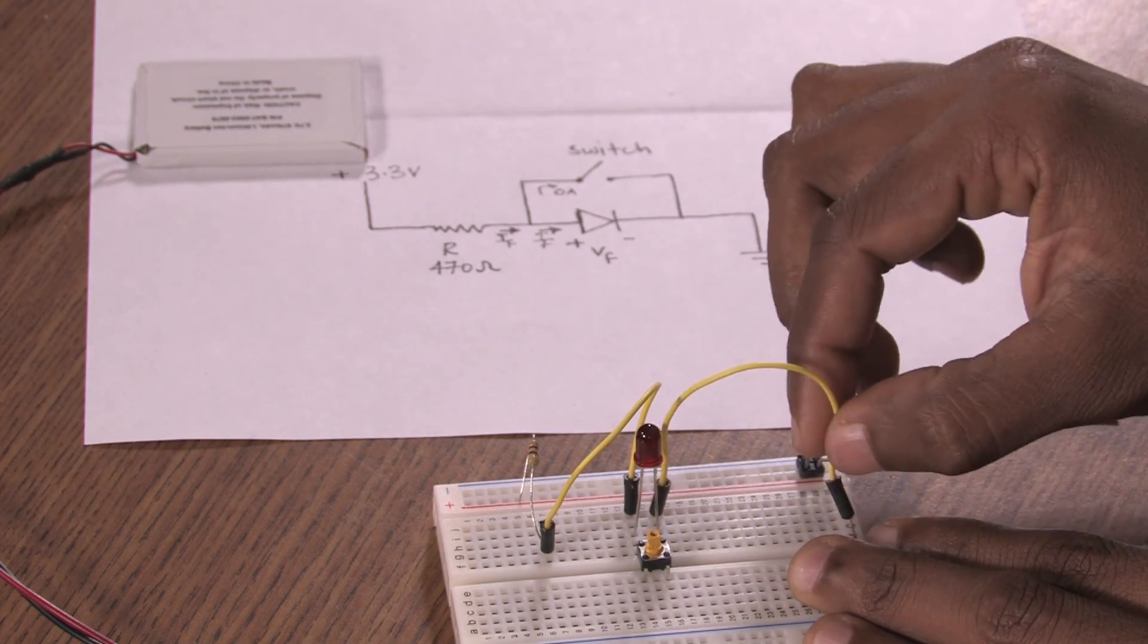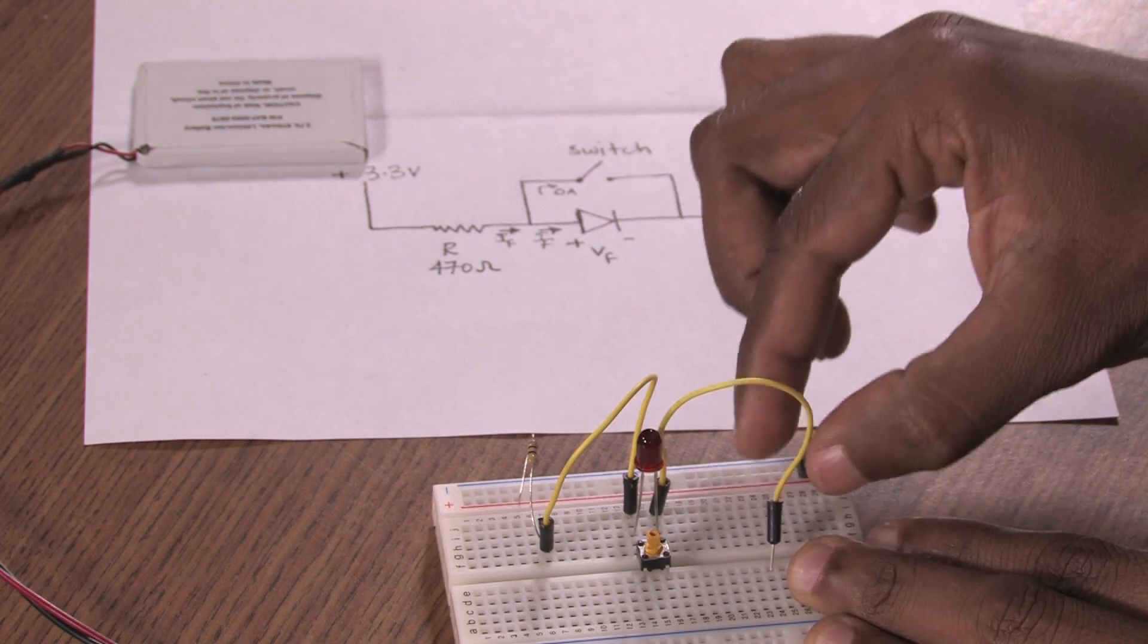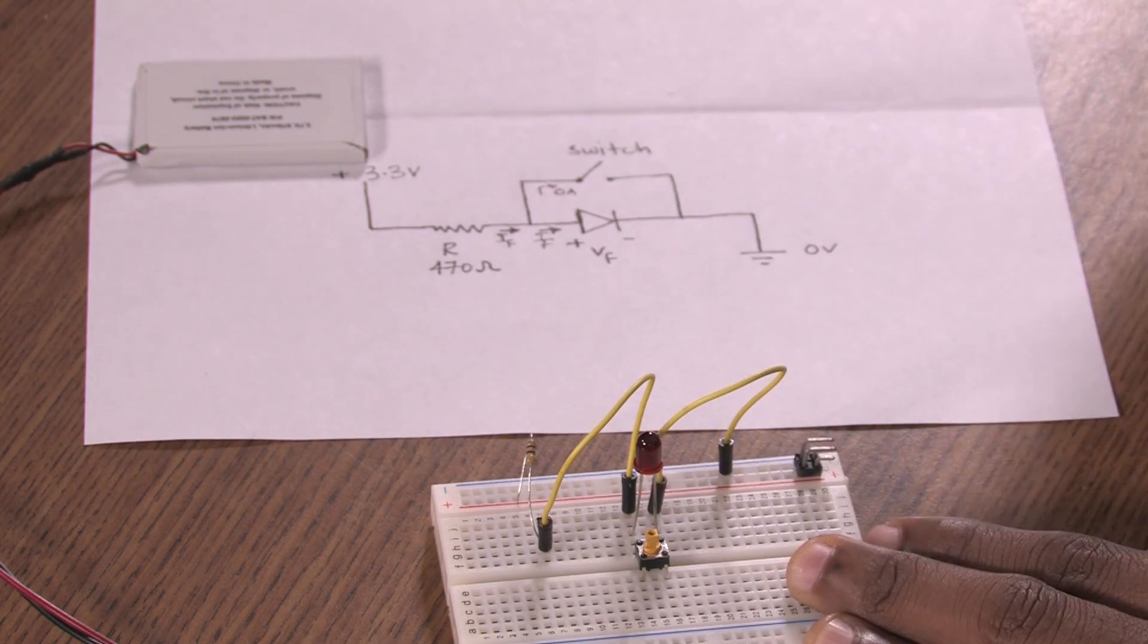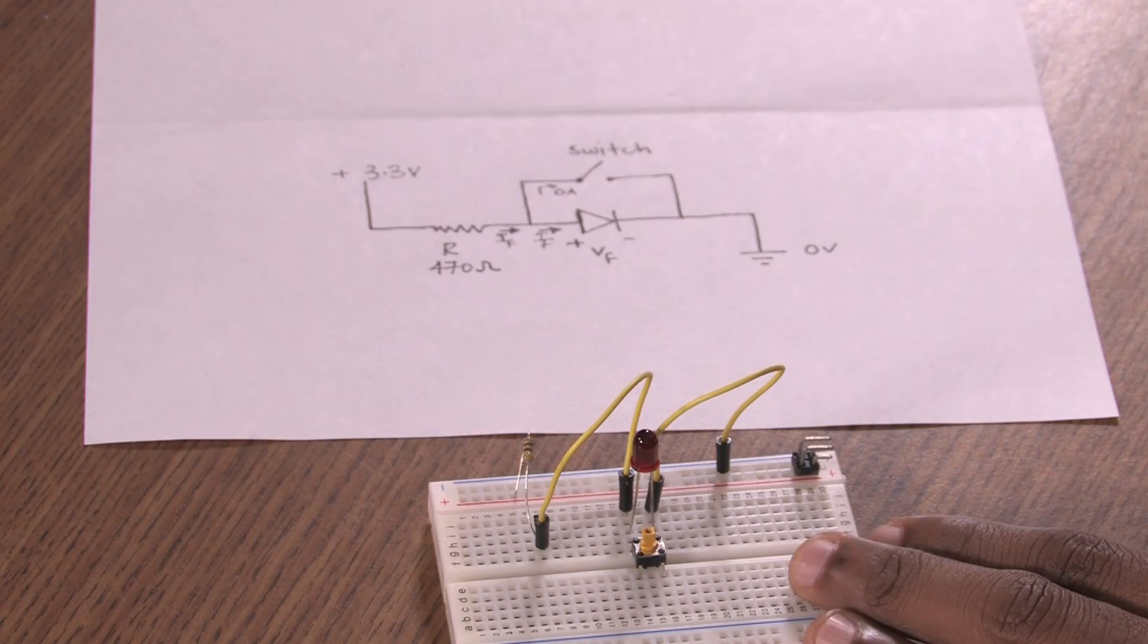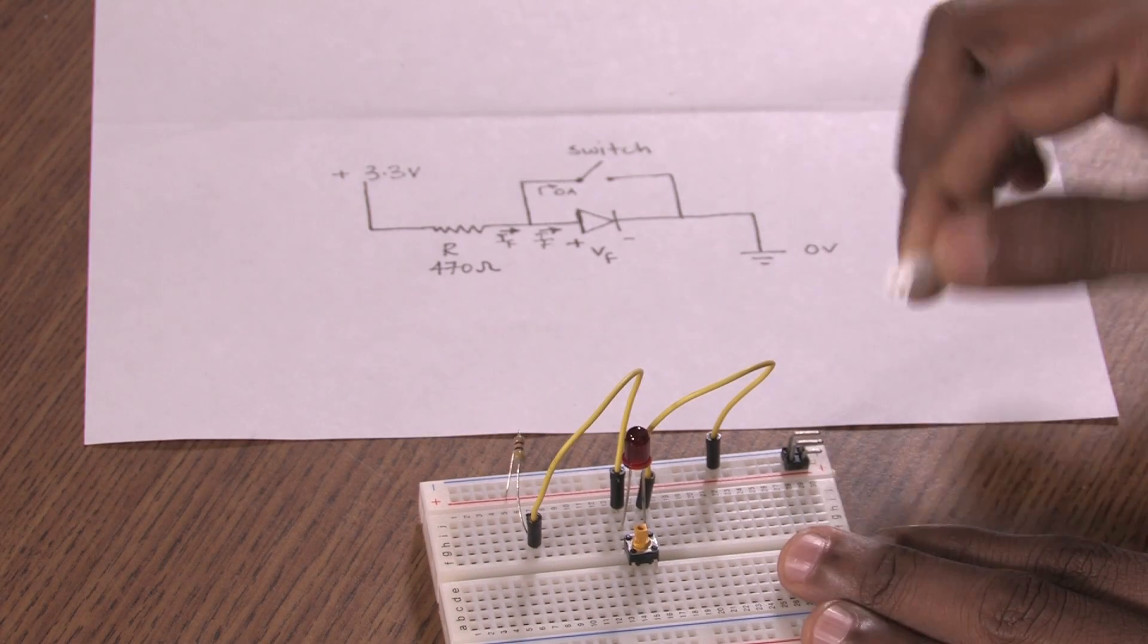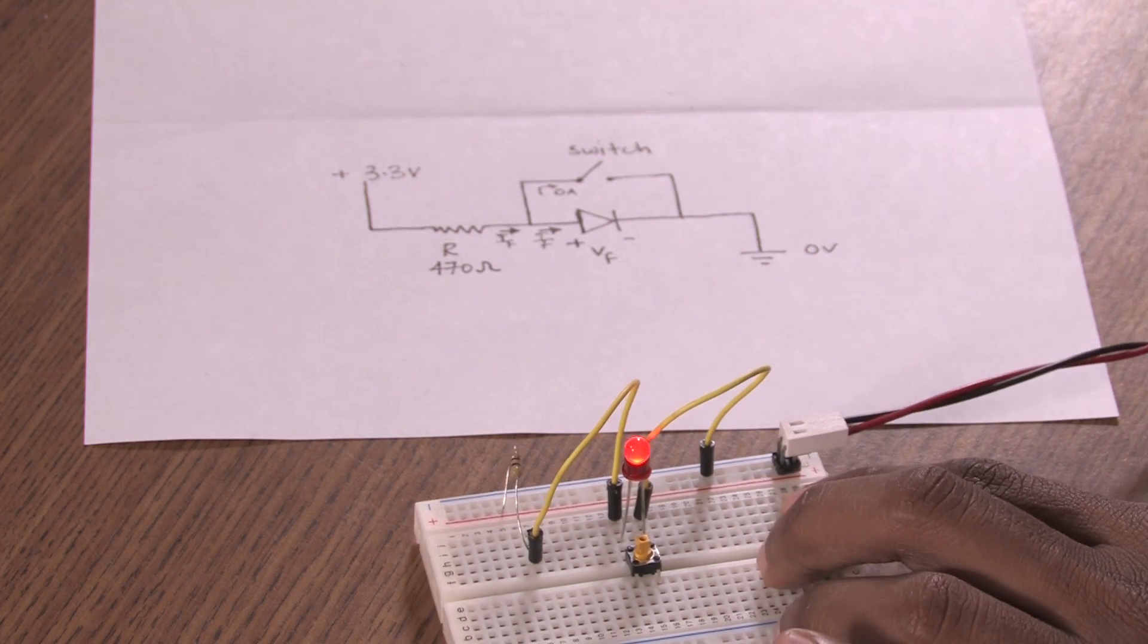the other end of the switch, the common terminal of the switch and the LED goes to ground, which is negative here. And now we will tie in the power. And as we,